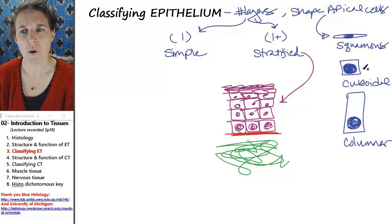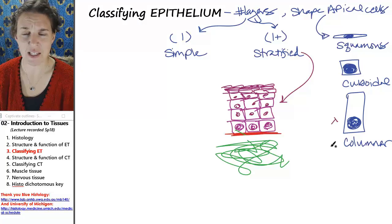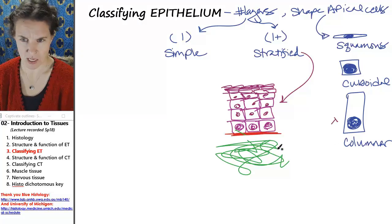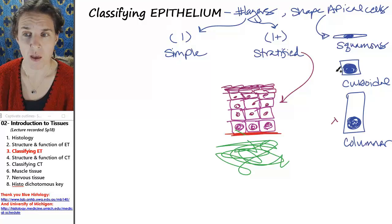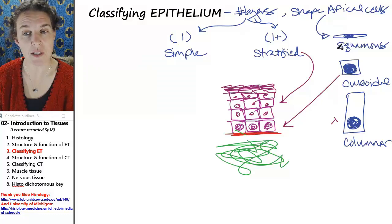Now, what is this shape? Squamous, cuboidal, or columnar? Is it columnar? Definitely not. Nothing column-y here at all. Cuboidal? There's some cuboidal cells. Squamous? There are some squamous cells.